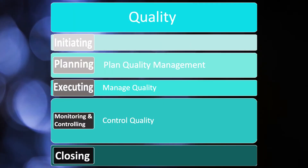That's it for quality. We covered the three processes: Plan Quality Management, Manage Quality, and Control Quality. Thanks so much for watching. We have a lot more videos coming up and you will start to see the patterns emerge as we continue through the knowledge areas.